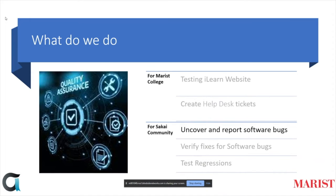After a Jira is created, one of the available developers works on a fix for it. Once a developer creates a fix, it is uploaded on the Sakai server and then tested based on the test plan present in the Jira. The testing could result in either a success or a failure. In either case, the tester leaves a comment on the Jira indicating steps followed, what went wrong in case of failure, and the browser and operating system used. The last of the three is testing regressions — features that work in previous versions of Sakai but not in the current version.